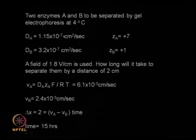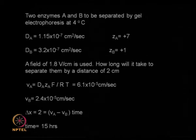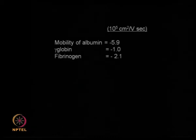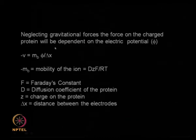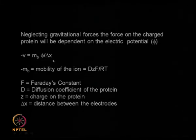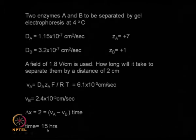So the simple equation — velocity equals mobility times electric potential divided by delta x (the electrode separation) — is used to calculate how long to apply the electric field so that proteins get separated by 1, 2, or 3 centimeters. This straightforward approach tells you, in an electrophoresis system, how to separate out proteins based on their charge and diffusion coefficients.